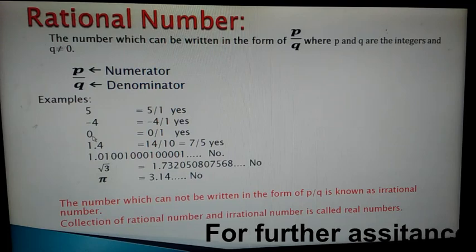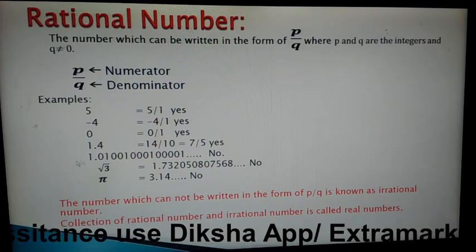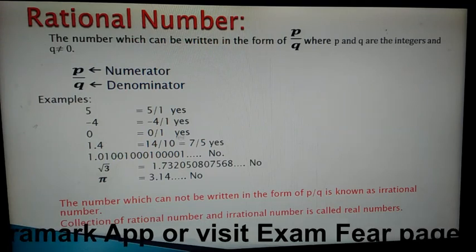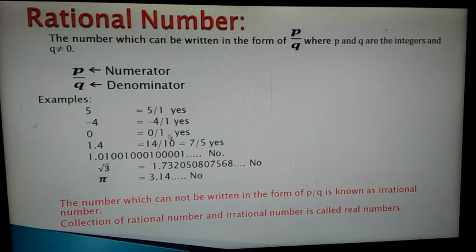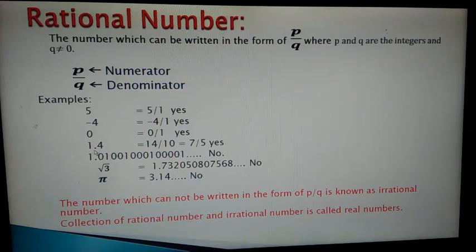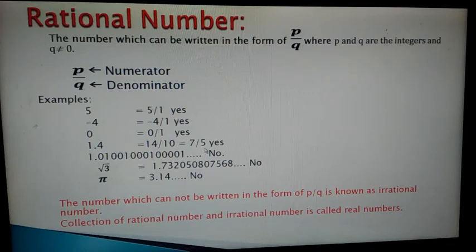Can we say that 0 is a rational number? Yes — 0 can be written as 0 upon 1, where 1 is not equal to 0, so 0 is also a rational number. The next example is 1.4 — can we write 1.4 in the form of p by q? Yes, 1.4 can be written as 14 by 10, and when we simplify this we get 7 upon 5, so 1.4 is also a rational number.